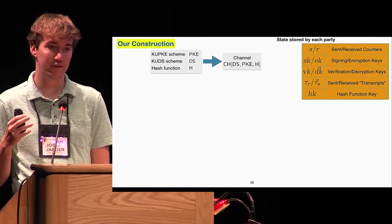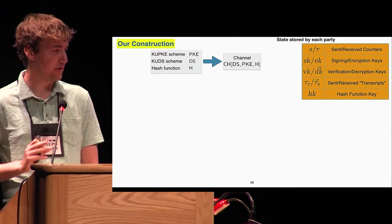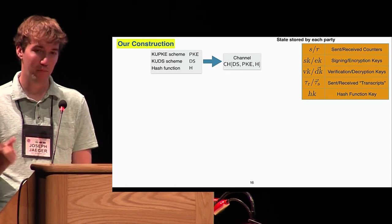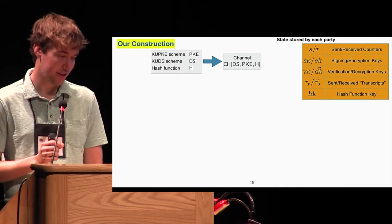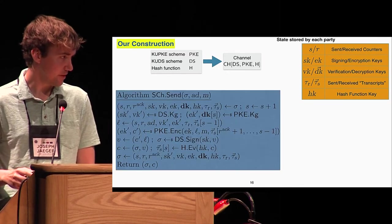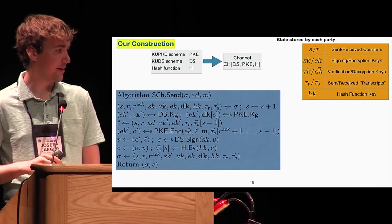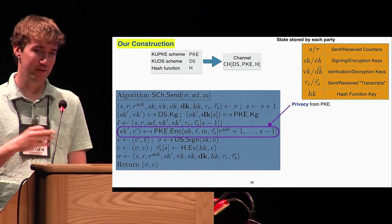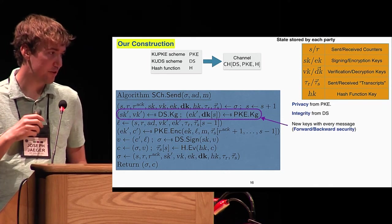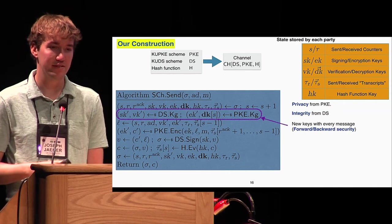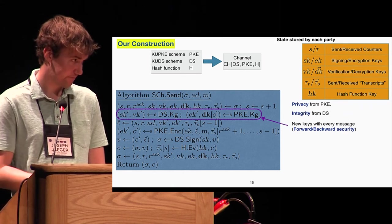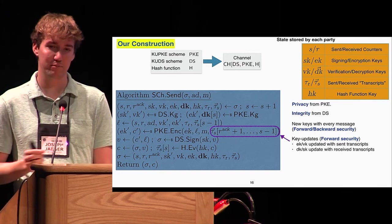Okay, so like I said, we can then combine these two primitives together with a collision-resistant hash function to ultimately obtain the channel that we want. At a high level, the state will be storing at any particular time: a counter, public keys for both of our types of primitives, the private keys including possibly multiple decryption keys, and then also transcripts of the messages we've sent to the other party and transcripts of what we've received from the other party, together with of course our hash function key. The construction, which I'm not expecting you to read the pseudocode in detail, but at a very high level what we did is that the public key encryption provides the privacy, the integrity comes from the digital signature scheme.